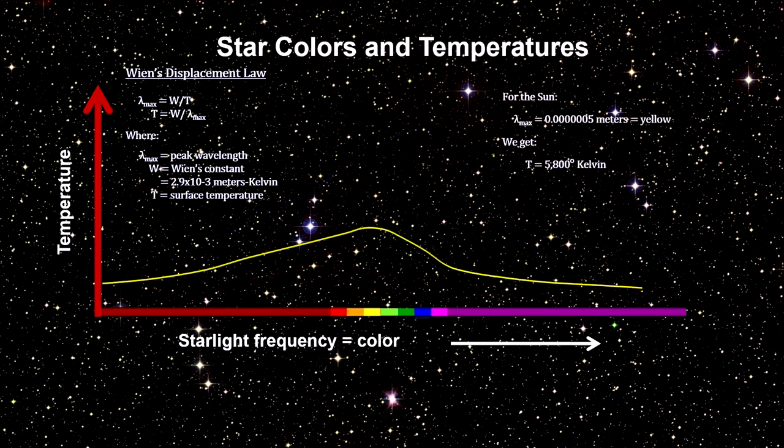Now that we know star temperatures, via their color, and luminosity, via their parallax distance, we can build a diagram I mentioned in the introduction.